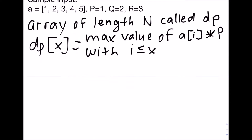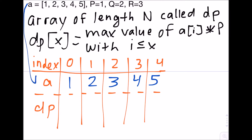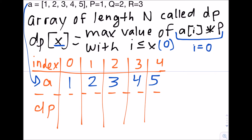I'll explain this using an example. Let's look at the sample input. I've copied the array a here, written the indexes on top, and created a spot for the array dp. The array dp has a length of n, which is 5 in this case. Let's calculate dp[0]. For dp[0], x equals 0, and this is the maximum value of a[i] times p with i less than or equal to 0. Since i must be a non-negative number, the only possible value of i is 0. So dp[0] equals a[0] times p, which in this case is 1.